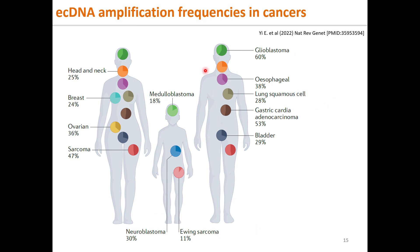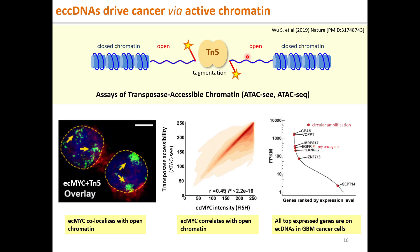ECDNAs are present across most cancer cell types, with glioblastoma being the most frequent at 60%. Cancers containing ECDNA have much poorer prognosis and worse clinical outcomes. The other important mechanism of ECC DNA driving cancer is by active, open, accessible ECC DNA chromatin.